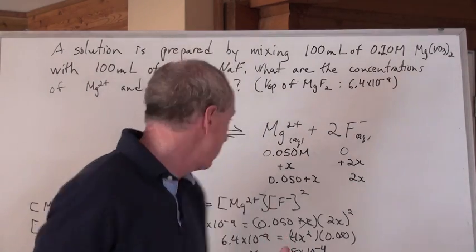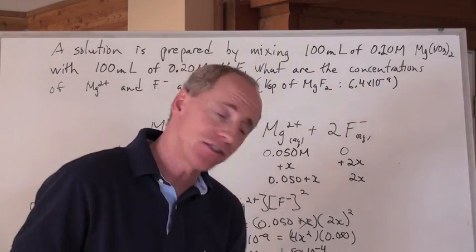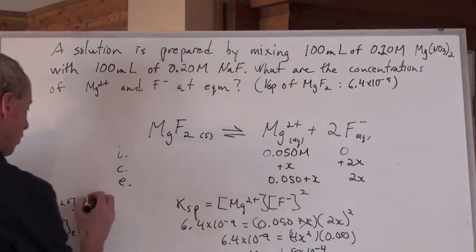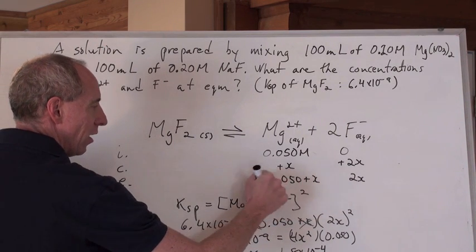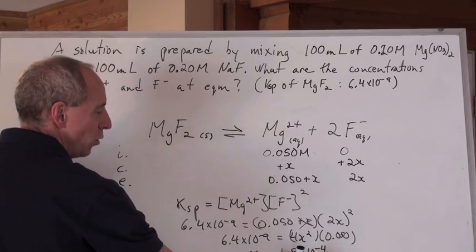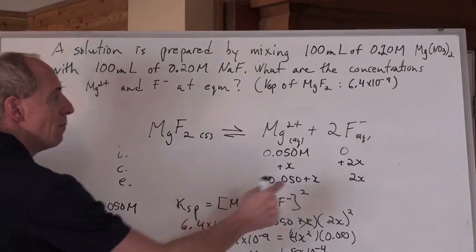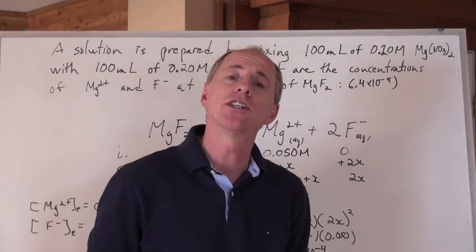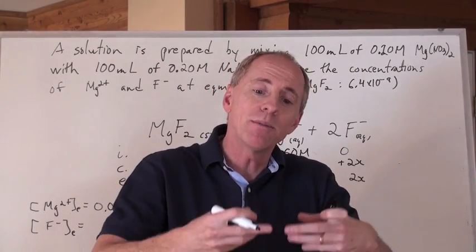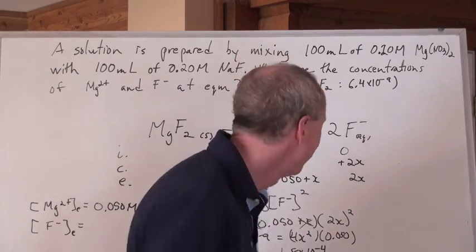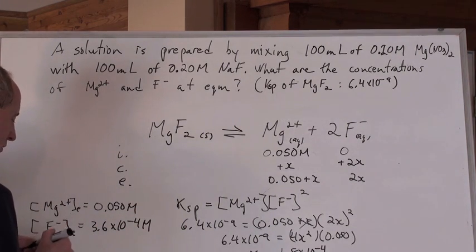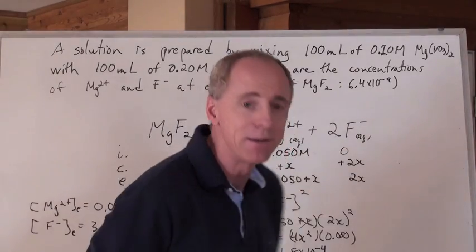Plugging x back in: [Mg²⁺] = 0.050 + x ≈ 0.050 mol/L, since x is negligible. The F⁻ concentration is 2x = 2(1.8×10⁻⁴) = 3.6×10⁻⁴ mol/L. So while F⁻ was effectively wiped out in the stoichiometry step, the equilibrium tells us a very small concentration of F⁻ does exist in solution.